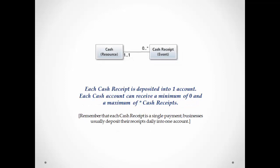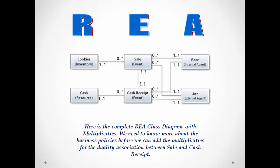Finally, the multiplicities between the cash receipt event and the cash resource. Each cash receipt is deposited into one account. Each cash account can receive a minimum of zero and a maximum of many cash receipts. Thinking about these multiplicities, you should remember that each cash receipt is a single payment, and businesses usually deposit their receipts daily into one account. So when we put this all together, we have a complete REA model with classes, associations, and multiplicities.